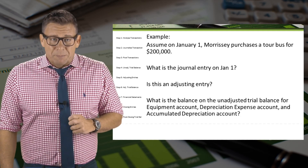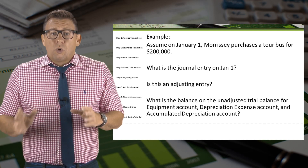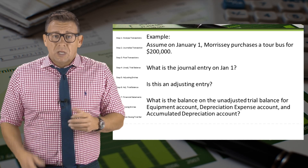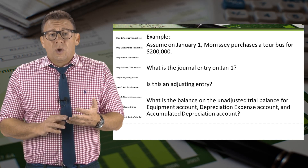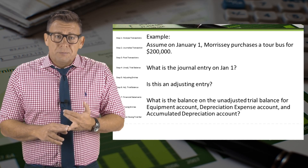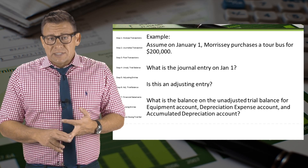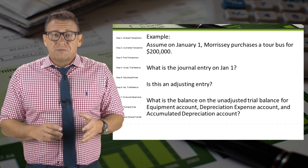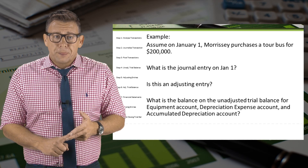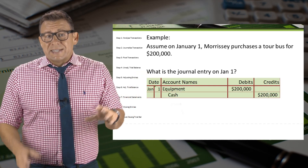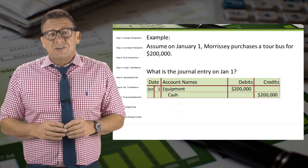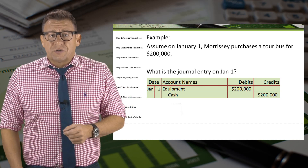Let's look at this example. Assume on January 1, Morrissey purchases a tour bus for $200,000. What is the journal entry on January 1? Is this an adjusting entry? And what are the balances on the unadjusted trial balance for equipment, depreciation expense, and accumulated depreciation? The journal entry on January 1 is a debit to the asset account equipment and a credit to the asset account cash for $200,000.